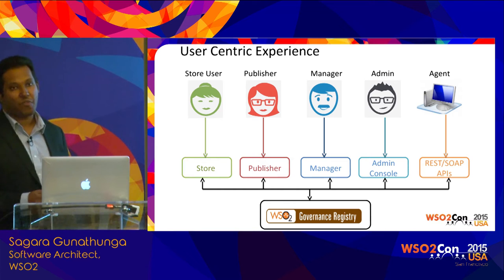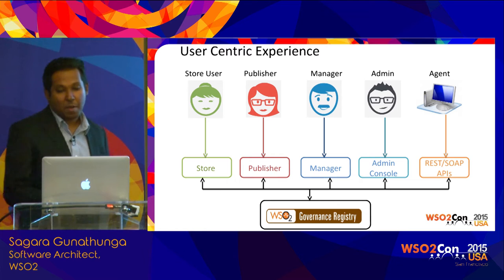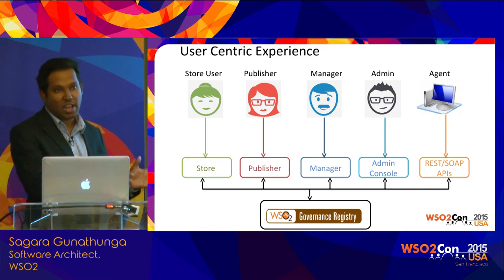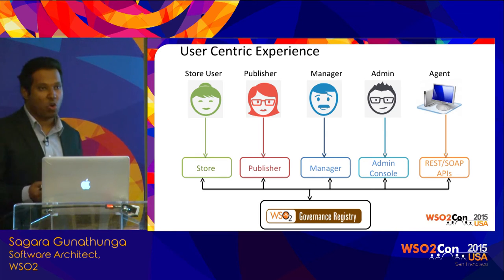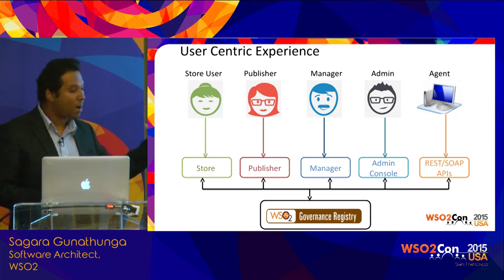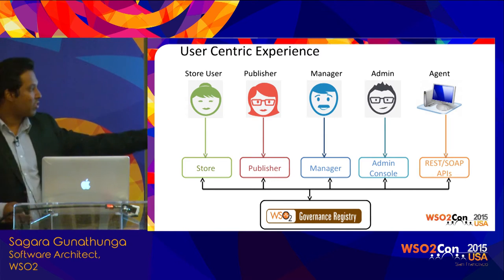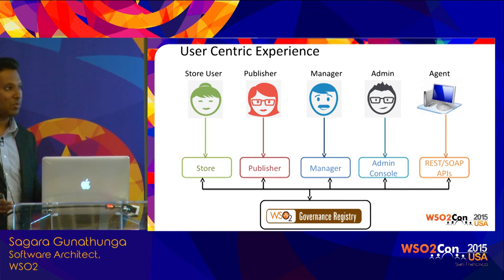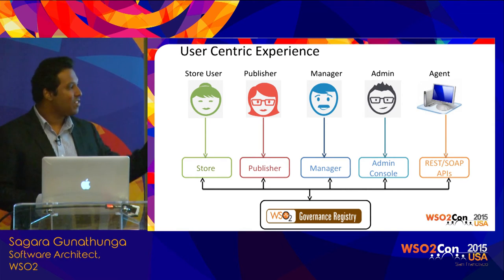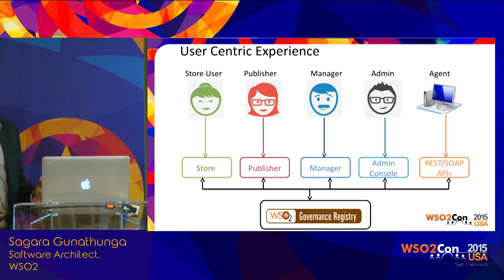With the 5.0 series, what we have provided is a separate user view. Each of these groups gets their own view — not the admin console anymore. For example, we have something called the Governance Store, where all your consumers come. Then publishers come to a separate area called Publisher. At the moment we don't have the manager application, but that is part of our 5-series roadmap. The manager and admin side connects to the governance registry for administrative and management tasks. We also have a brand new REST API and SOAP API, mainly for integrating with other systems — non-human interaction.